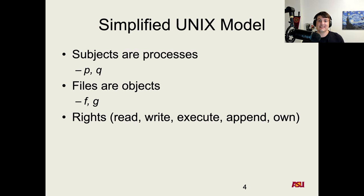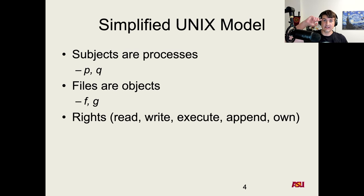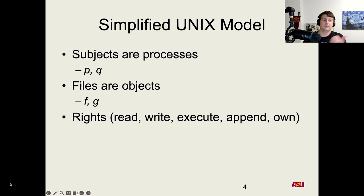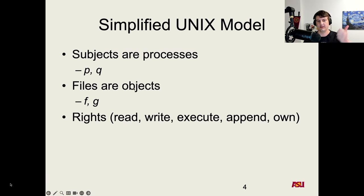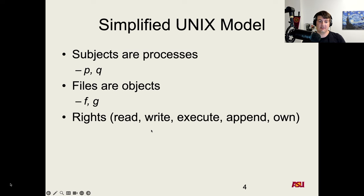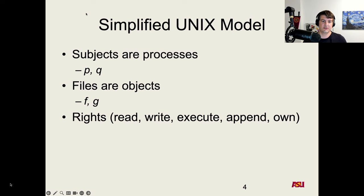The rights in this model are: read, write, execute, append, and own. It's important to understand the semantics of each. Read means a process can view the contents of a file if it has that right. Write means a process can change the contents of a file. Execute means a process can run a file, which creates a new process in the system — adding a new row to the matrix.